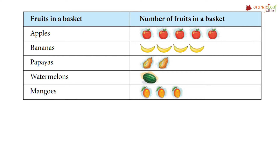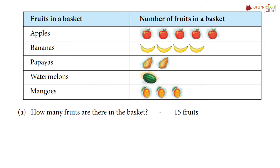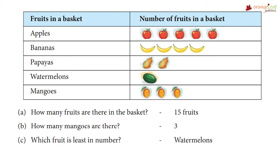Here you can see the information represented in a pictograph. How many fruits are there in the basket? There are 15 fruits in the basket. How many mangoes are there? There are three mangoes. Which fruit is the least in number? The watermelon is the least in number. And which fruit is the maximum in number? Apples are maximum in number. Now I hope you understood how to make a pictograph. Let's test it with an exercise.